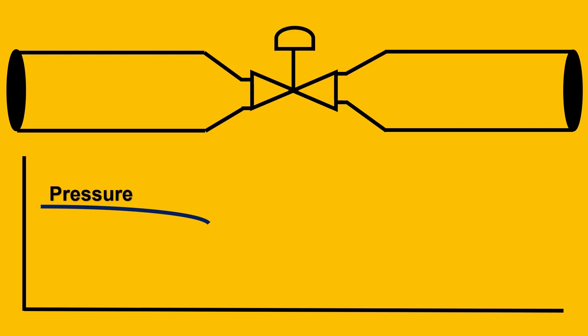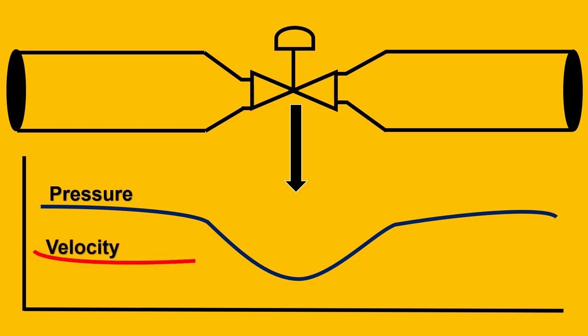So, initially the pressure is high then across the valve the pressure is going to drop and eventually some of it will get recovered. On the opposite side what is going to happen to velocity as the law of conservation of energy says when the pressure is high the velocity would be less. As the pressure drops the velocity is going to increase and eventually as the pressure is recovering the velocity is going to reduce.